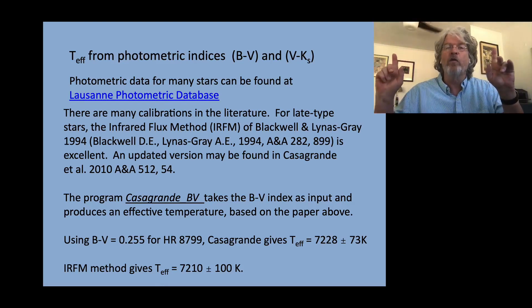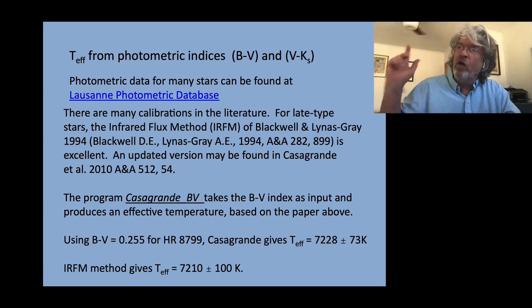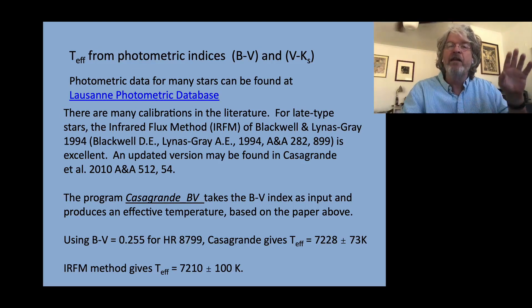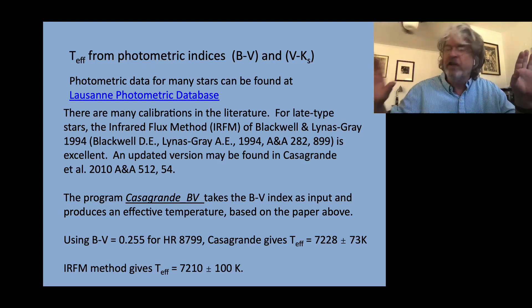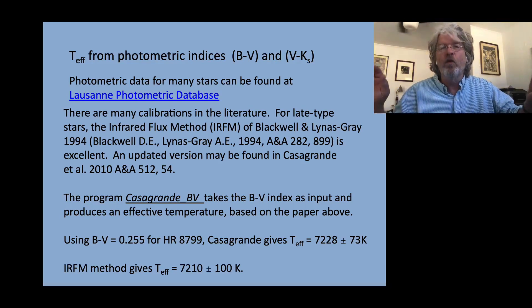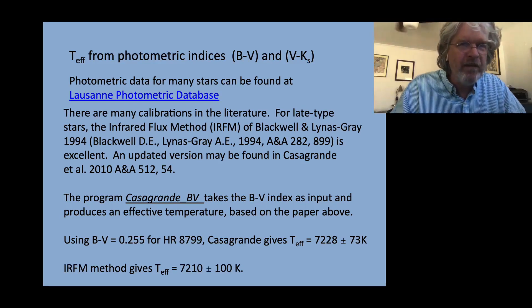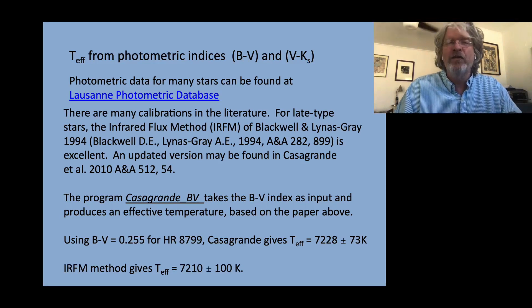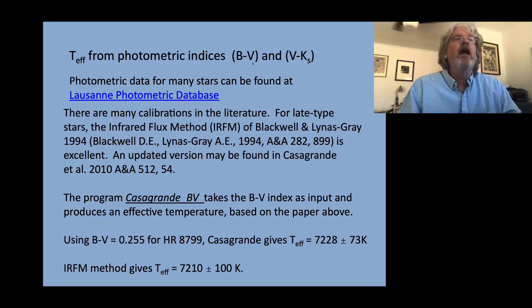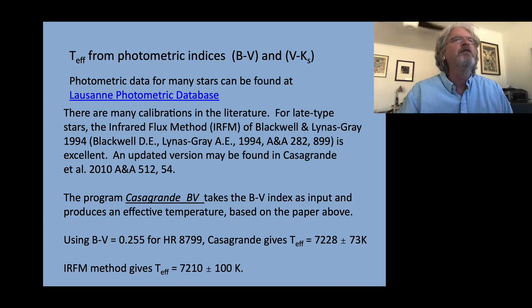We take a short wavelength filter, a bluer filter, and a longer wavelength filter, and compare the brightness of the star in the two filters. If the star is hotter, it'll be brighter in the shorter wavelength filter and fainter in the longer wavelength filter. If the star is cooler, it'll be brighter in the longer wavelength filter and fainter in the shorter wavelength filter. But these are magnitudes. So looking at B minus V — the brightness in the V filter compared to the brightness in the B filter. If a star is hot, it's going to be brighter in B than in V, so its magnitude in B is going to be smaller than its magnitude in V.